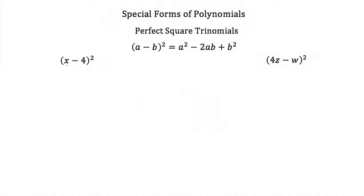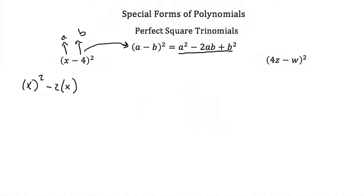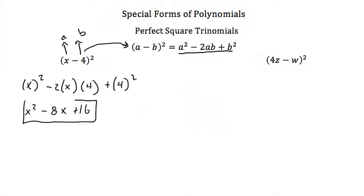Let's try using this with x minus 4 squared. Here a is x and b is 4. Plugging into the formula: x squared minus 2 times x times 4 plus 4 squared. Simplifying: x squared minus 8x plus 16. So x minus 4 squared equals x squared minus 8x plus 16.